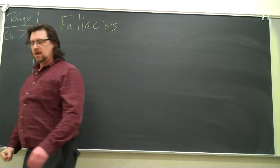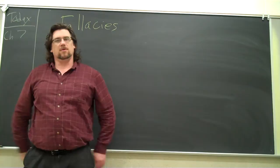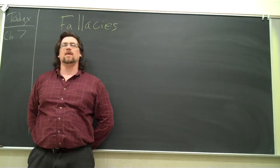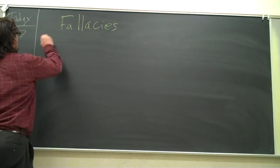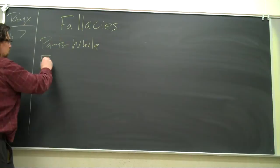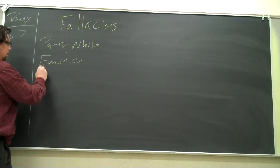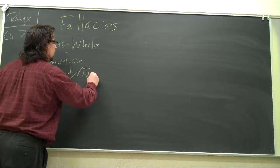Again, we're dealing with fallacies, and we are in Chapter 7 now. Last session we dealt with two fallacies, or maybe two and a half if you count smoke screen as a different fallacy, that didn't fit into those families of fallacies that we had. You remember we had fallacies that deal with parts of the whole, we had fallacies that deal with emotion, we had fallacies that dealt with authority or experts.